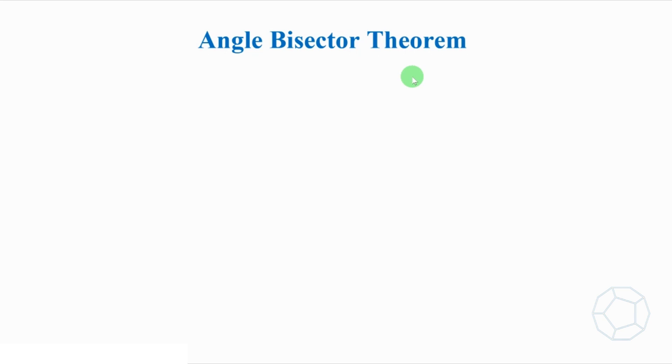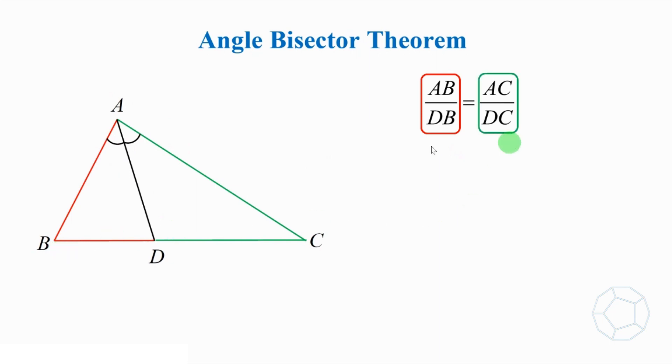Here we will be presenting three different ways to prove it. So what's the theorem about? In triangle ABC, D is a point on BC so that AD is the angle bisector of the angle at A. Then the ratio of the red side AB over DB is equal to the ratio of the green side AC over DC.